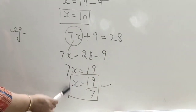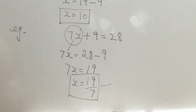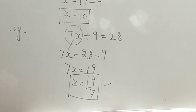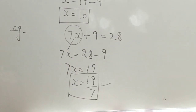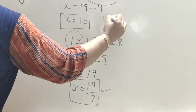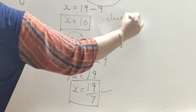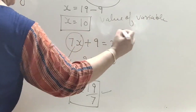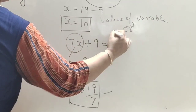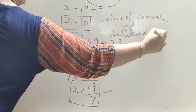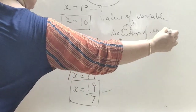The value of x we find is called the value of the variable, and also the solution of the equation. Both terms — value of variable and solution of equation — mean the same thing.